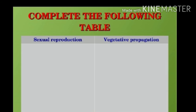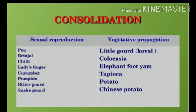stem and leaf is called vegetative propagation. Complete the following table with suitable examples for sexual reproduction and vegetative propagation, and find out more examples for this section.